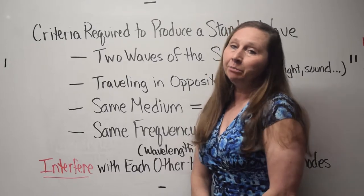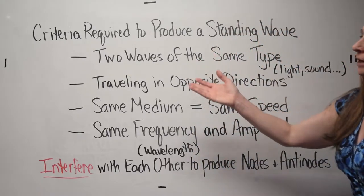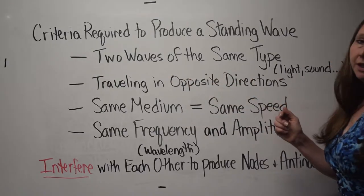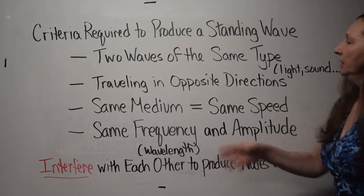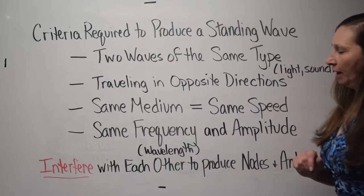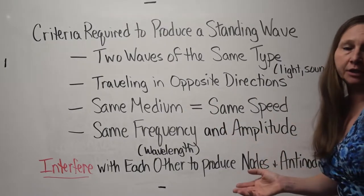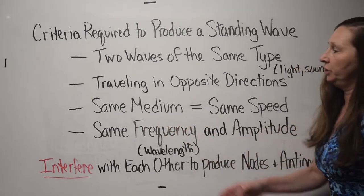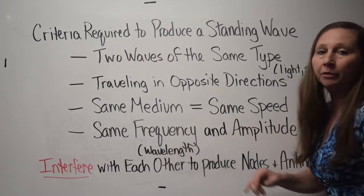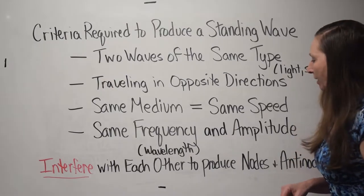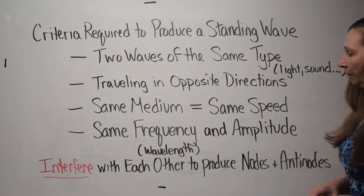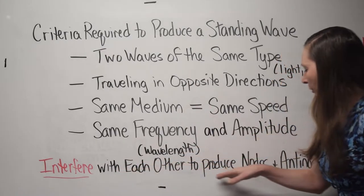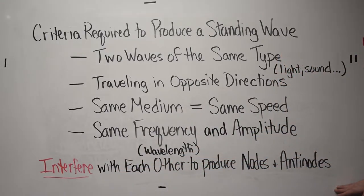Here are the criteria required to produce a standing wave in bullet form: two waves of the same type — light, sound, etc. — traveling in opposite directions, in the same medium (meaning the same speed), with the same frequency, which also requires the same wavelength. Same frequency and amplitude. When they interfere with each other under these conditions, they will produce nodes and anti-nodes.